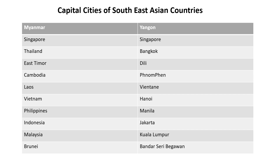The capital cities of Southeast Asian countries are: Myanmar — Yangon; Singapore — Singapore; Thailand — Bangkok; East Timor — Dili; Cambodia — Phnom Penh; Laos — Vientiane; Vietnam — Hanoi; Philippines — Manila; Indonesia — Jakarta; Malaysia — Kuala Lumpur; Brunei — Bandar Seri Begawan.